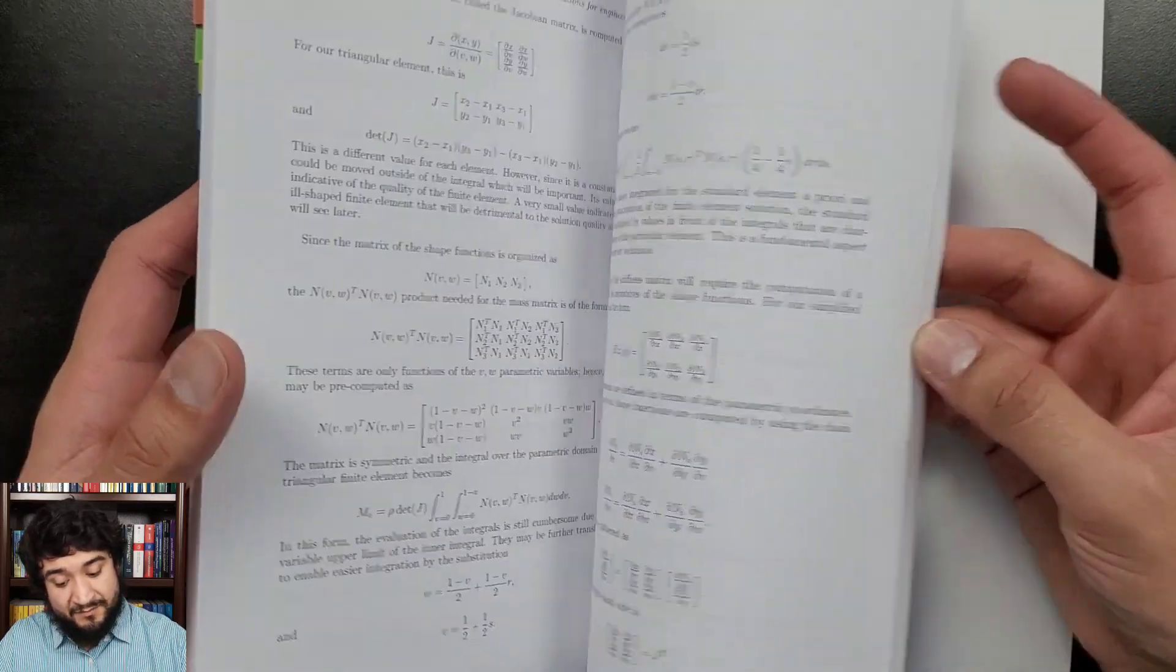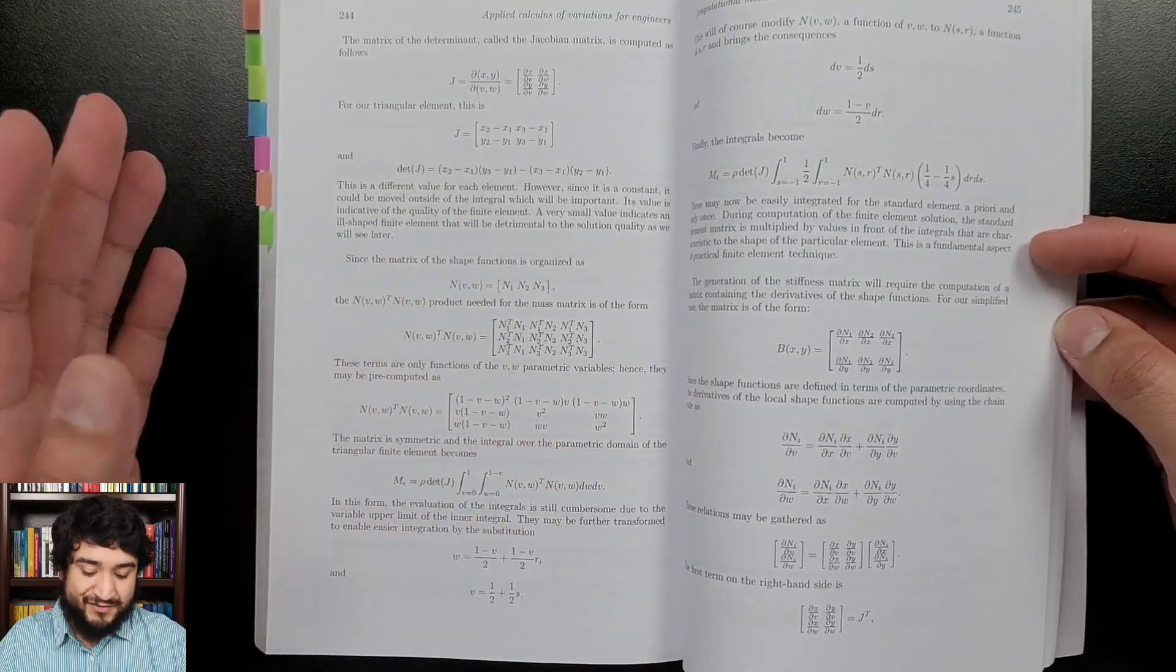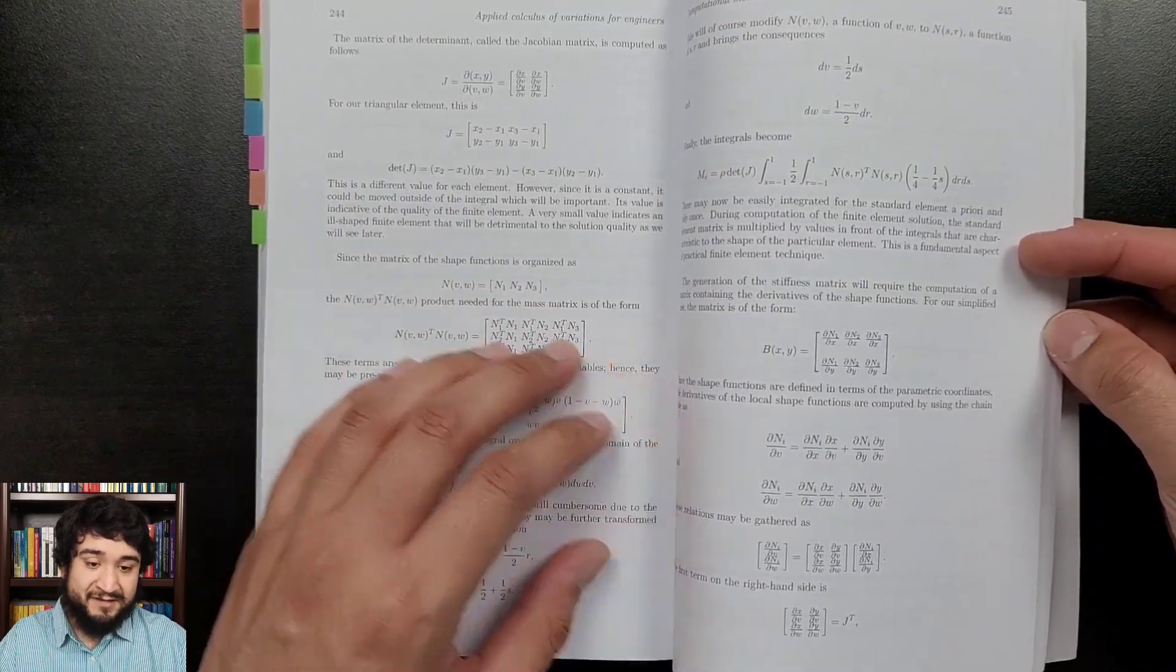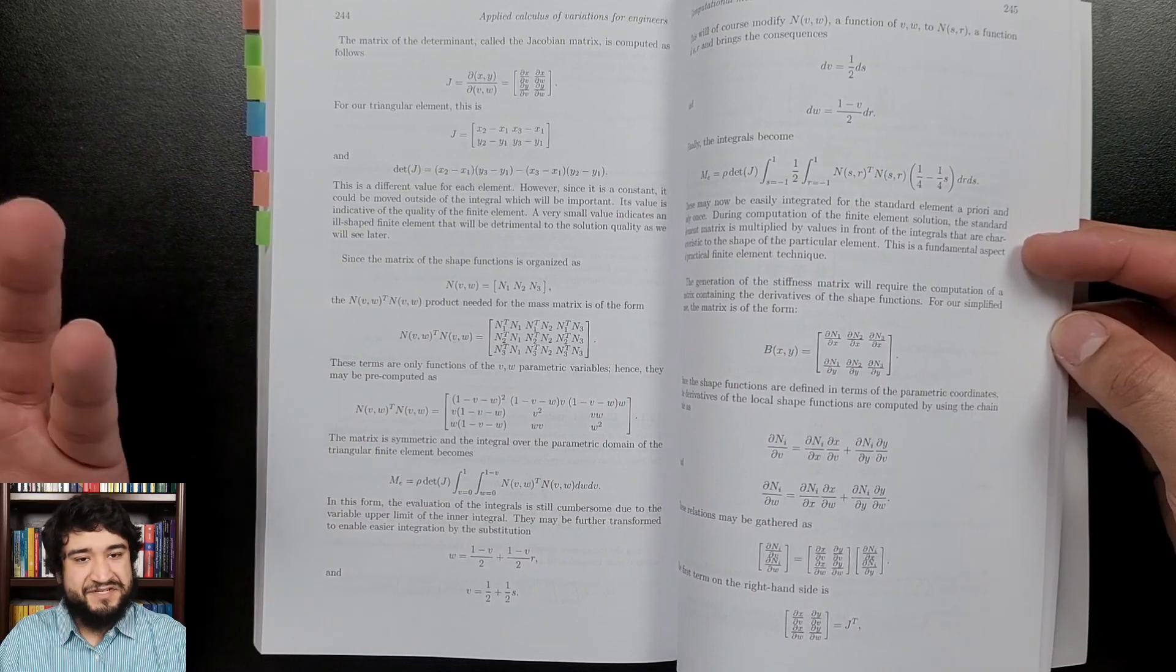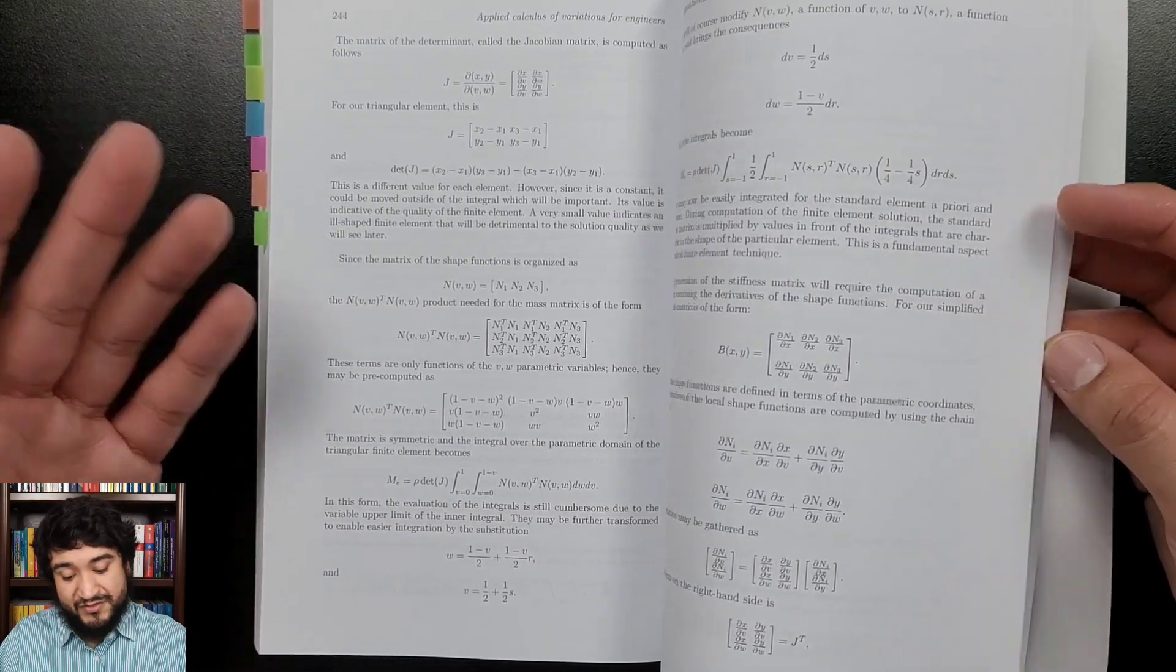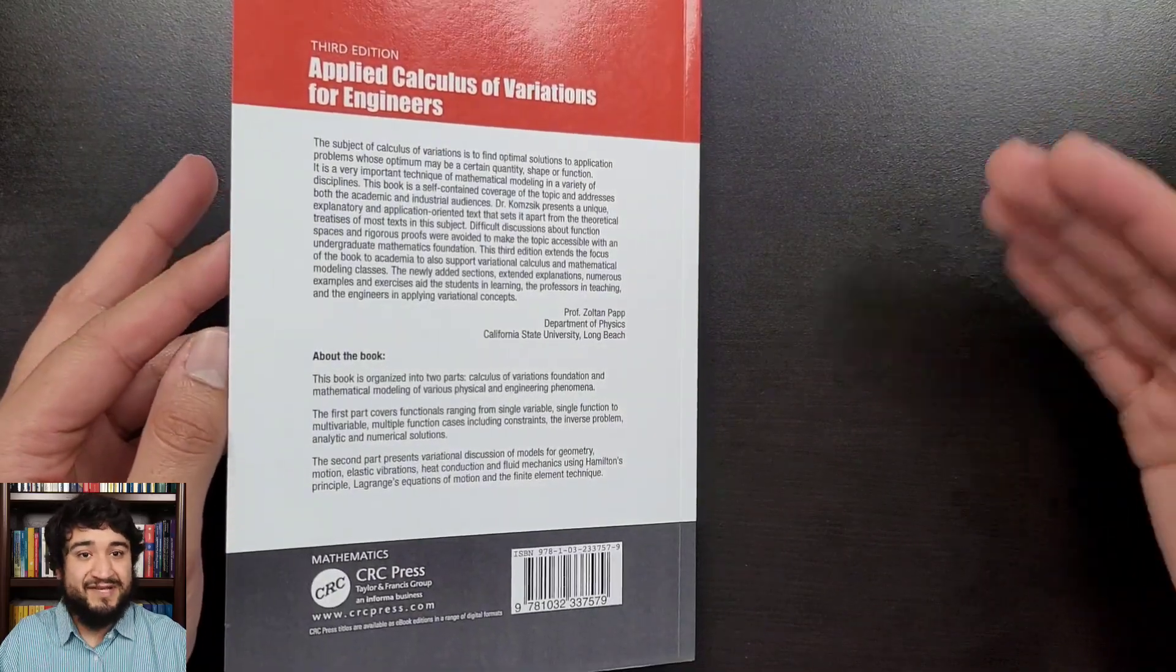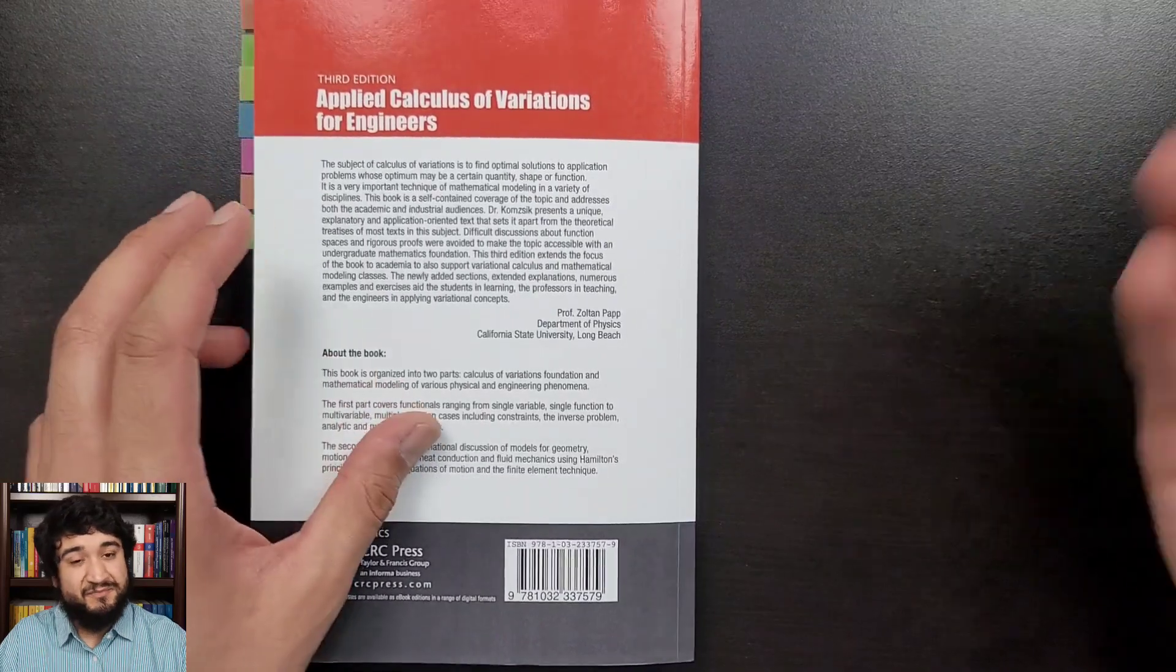Again, if you want to understand everything in this book, you're going to need those four or five things that I said in the beginning. For the first chapter, you pretty much just need multivariable calculus. As the book goes on, you will need more linear algebra, ordinary differential equations, and then partial differential equations, and that should be sufficient.